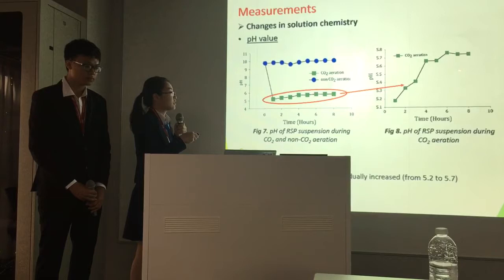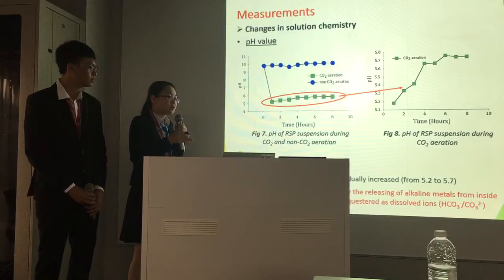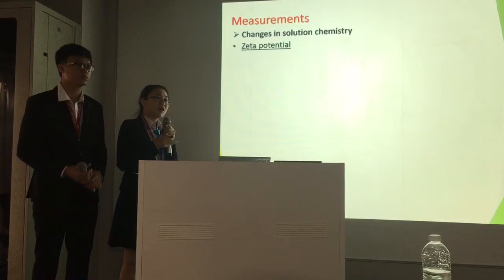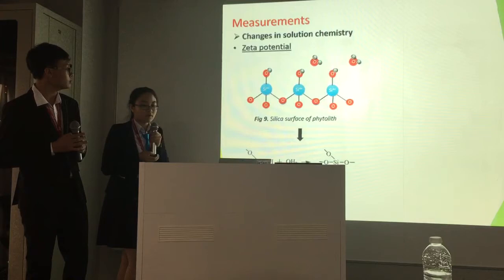If you notice closely, we see a gradual increase in pH from 5.2 to nearly 5.8. We can explain this increase in pH during carbon dioxide aeration: it is because of the release of alkaline metals from inside phytolith to the outside, which increases the pH and sequesters carbon dioxide. The pH has many effects on phytolith characteristics, and one of them is phytolith surface charge.